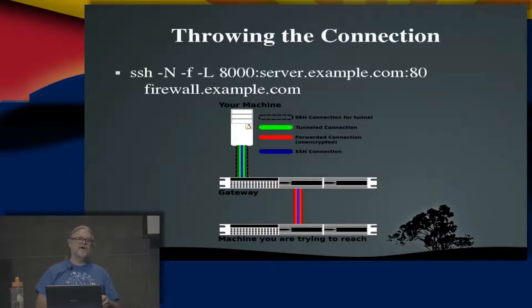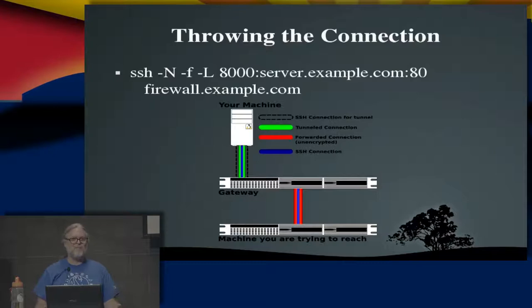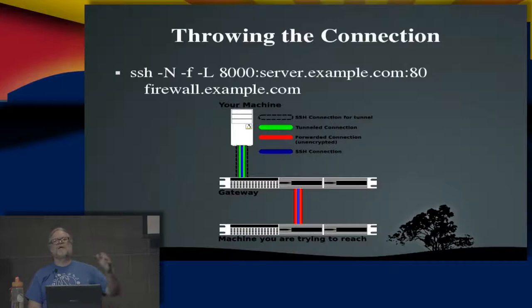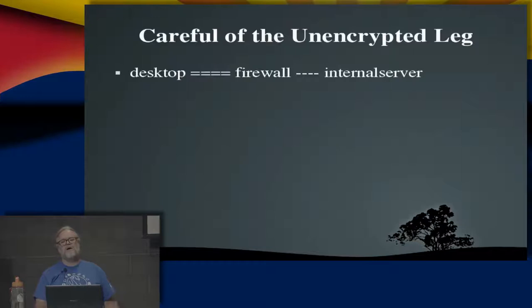With a corporate VPN, somebody else sets up everything and often just routes everything through the VPN. With SSH I set those things up myself — it takes a couple minutes or part of an hour at a new job. And often VPN lists don't get kept up to date, so I end up setting up SSH tunnels to reach parts of the company I can't get to otherwise. Always be careful of that unencrypted leg.